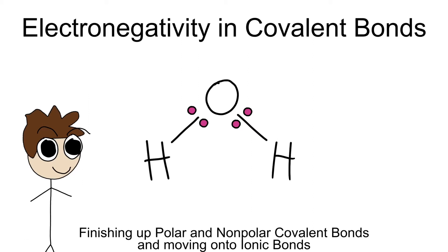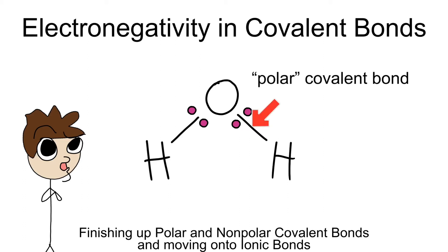What makes a shared electron gravitate more to oxygen than hydrogen? Well, that's because oxygen is much, much more electronegative than hydrogen. If there is an uneven sharing of electrons between atoms in a covalent bond, we refer to this as a polar covalent bond.